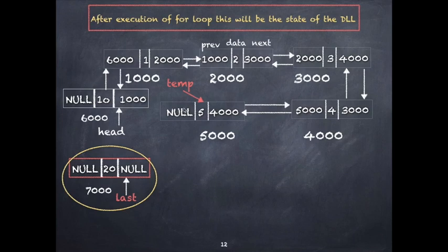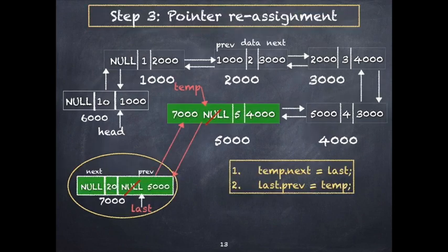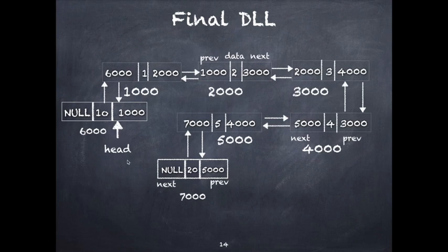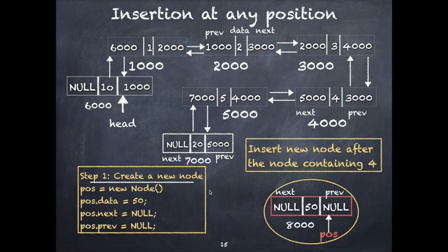Now do the pointer reassignments: set temp.next to the newly created node, and set last.previous to temp. Specifically, temp.next (initially null) is now set to 'last' at address 7000, and last.previous (initially null) is now set to temp. The next of 'last' remains null since it is the last node. The final DLL will be 10, 1, 2, 3, 4, 5, 20.